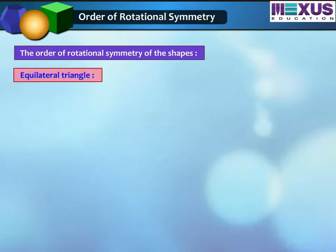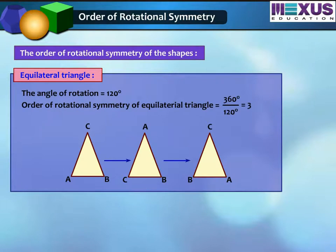Second, equilateral triangle. The angle of rotation of an equilateral triangle is 120 degrees. So, the order of rotational symmetry will be 360 degrees divided by 120 degrees, which equals 3.